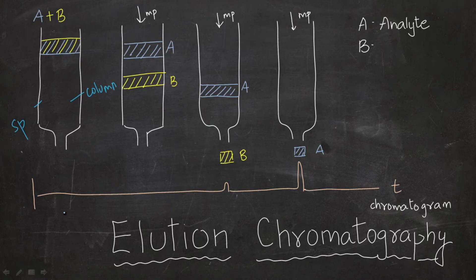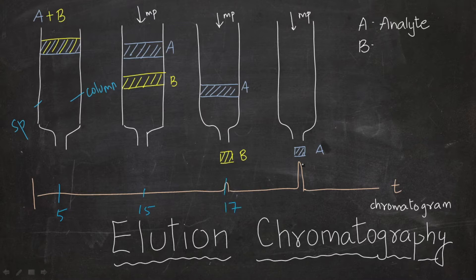Hello everyone, welcome to Mind Maps. In this video lecture we are discussing elution chromatography. We have a column and we are noting down the positions at various time intervals — say 5, 15, 17, 20, 30. These time intervals are not equal because when we separate a sample, the separation does not take place at equal time intervals. We have a mixture of A and B.